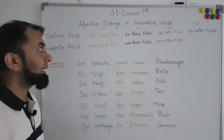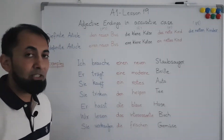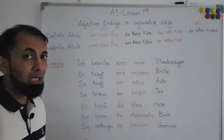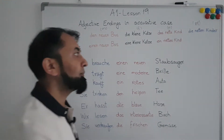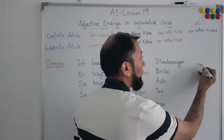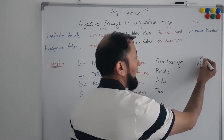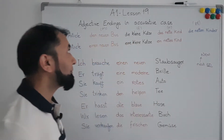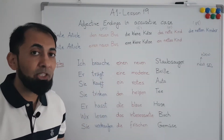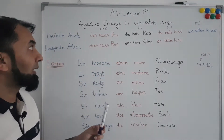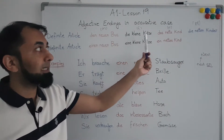The masculine noun 'Bus' has the article 'der', and in the accusative case its article becomes 'den'. If we want to use an adjective for this bus, we have to add '-en' at the end of the adjective. So if we have the adjective 'neu', which means 'new', we add '-en' at the end: 'neuen'. Whatever adjective we use for a masculine noun in accusative, we add '-en' at the end. This rule is valid for all masculine nouns.